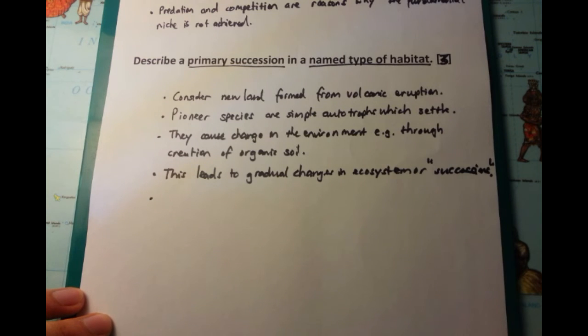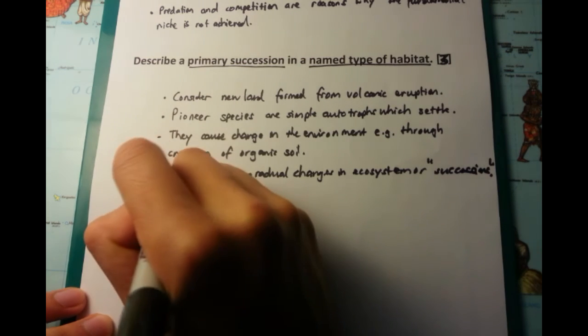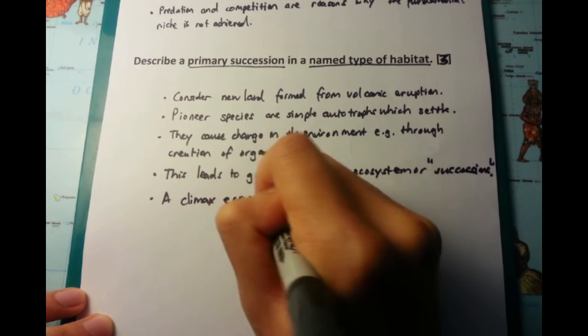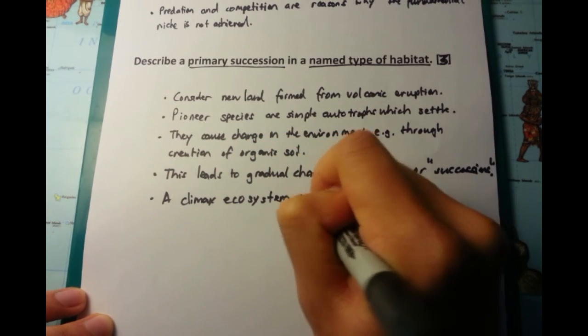So you've got a very basic, you've got the first, the primary succession, all the way going up to the climax ecosystem. And this is a big change from the start, obviously.